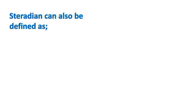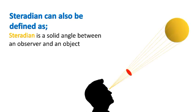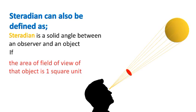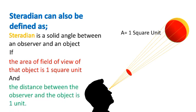Now, steradian can also be defined as: steradian is a solid angle between an observer and an object, if the area of field of view of that object is 1 square unit, and the distance between the observer and the object is 1 unit.